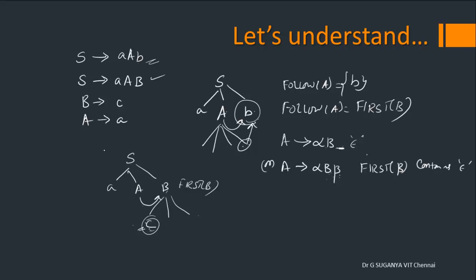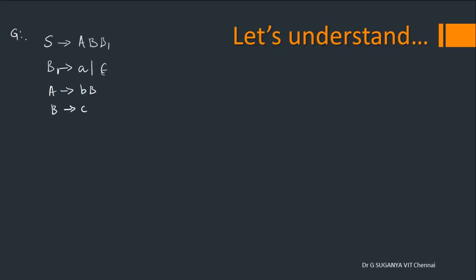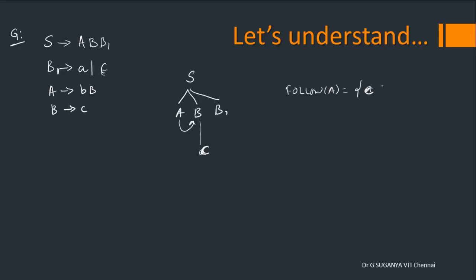Let me make this more clear with an example grammar. When S gets expanded to A B B1, what is following A? It is B. When B is a non-terminal, you can expand it. Using the first production you get FOLLOW of A includes 'a'; using the second, B gives C, so FOLLOW of A equals C. So what is following A? It is B, and B can be expanded to C — hence FOLLOW of A is C.